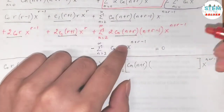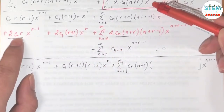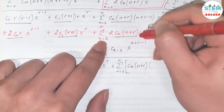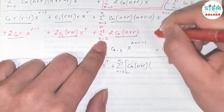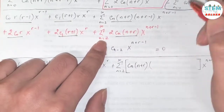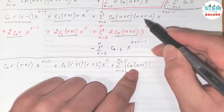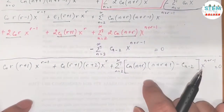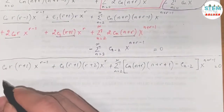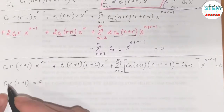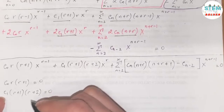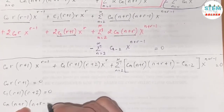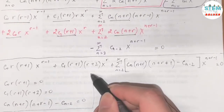Sorry — I noticed a sign error earlier; the term should be positive on one side. After correcting, setting each coefficient to zero gives the system: c_0 r(r+1) = 0; c_1(r+1)(r+2) = 0; and for the recurrence: c_n(n+r)(n+r+1) minus c_{n-2} = 0.